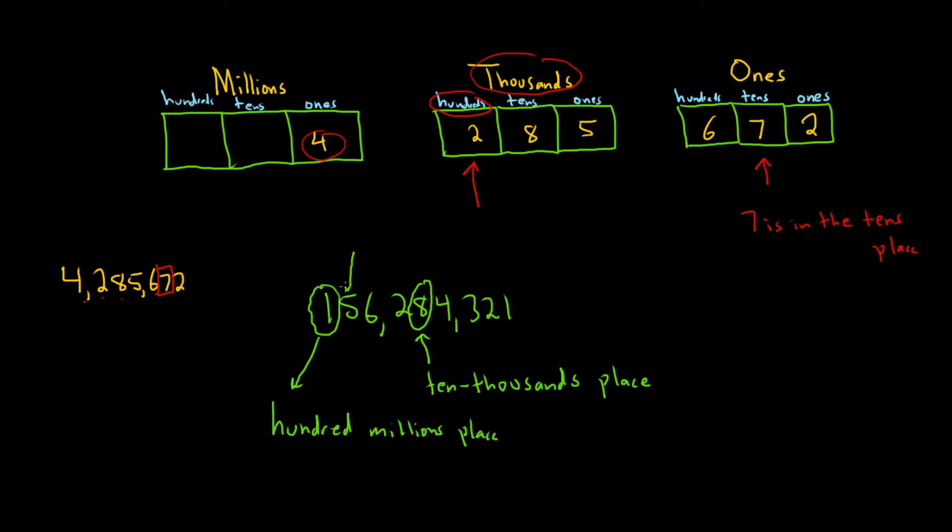Likewise, 5 would be in the tens-millions place. 6 would be in the millions place. 2 would be in the hundred-thousands place. 8, we said, was in the ten-thousands place. 4 would be in the thousands place. And then 3 in the hundreds, 2 in the tens, and 1 in the ones.